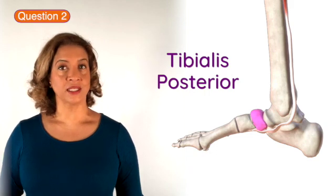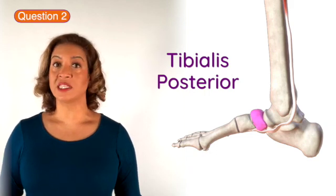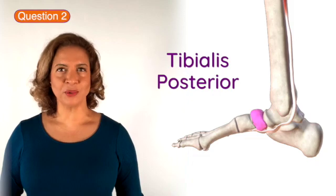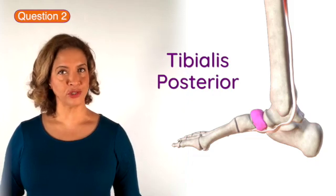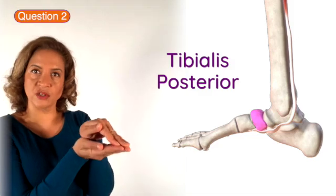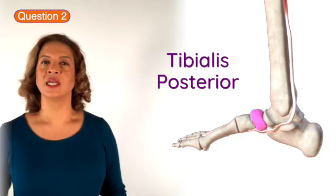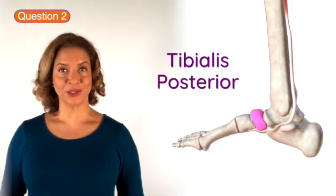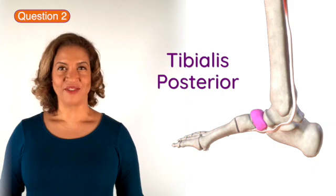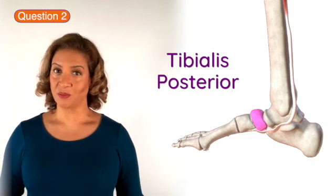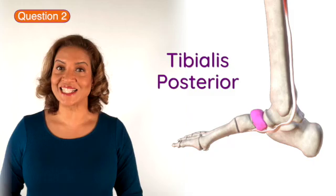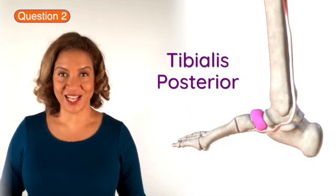It is the tendon of the tibialis posterior which attaches to the medial aspect of the navicular bone. The tibialis posterior tendon plays a very important role in the biomechanics of the foot. It helps to maintain the inner arch of the foot, known as the medial longitudinal arch. If the tibialis posterior does not function properly then the arch can collapse, and this is known as flat foot.